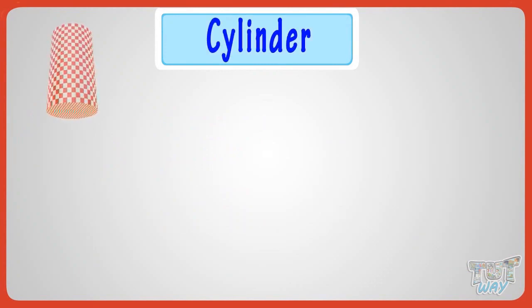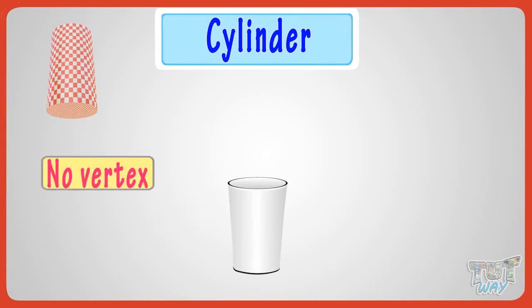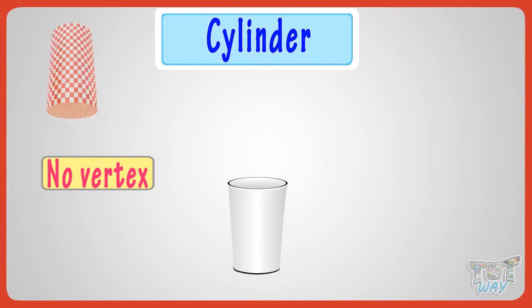Now let's learn another shape, that is a cylinder. This is a cylinder. Now let's figure out its vertices. Oops! It has no vertex. Now let's figure out its edges.